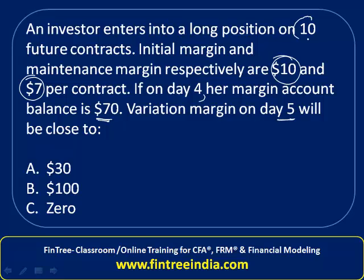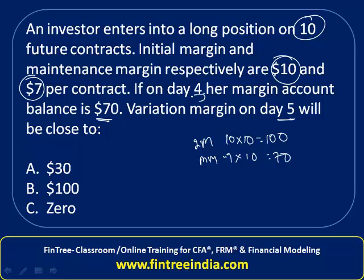We have a long position on 10 futures contracts. Initial margin is $10 per contract, so total initial margin would be $100. Maintenance margin is $7 per contract, so total maintenance margin is $70.